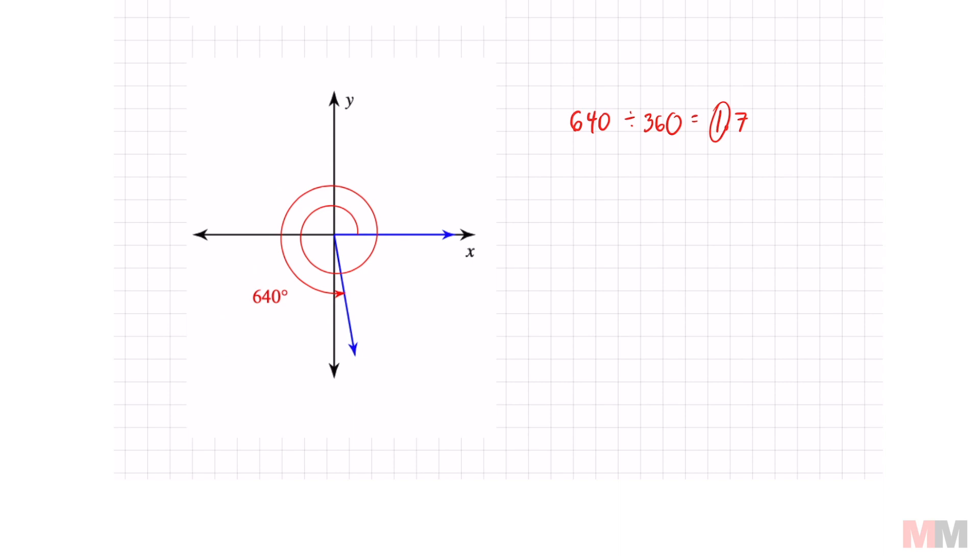That means I have one full circle that I traveled, and you can kind of see it right here. There's my one full circle. That's my 360. So 640 is really just 360 and some change. And in order to figure out that change, I just take 640 minus 360,